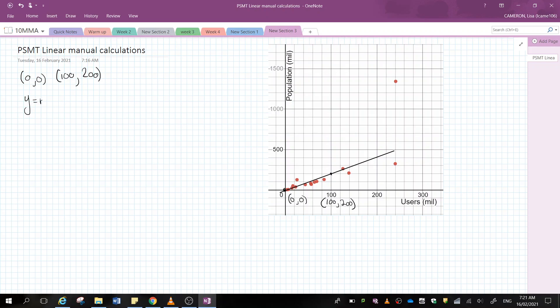So y equals mx plus c is how we calculate the gradient of a line. Oh sorry, how we calculate the equation of a straight line. First, I'm going to let x equal zero when y equals zero. This will give me zero equals m times zero plus c. So I can work out that c is just equal to zero because anything multiplied by zero is just zero. So that tells me that my equation is going to be y equals mx.